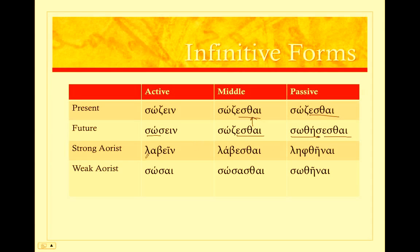The strong aorist is very similar in endings. So labein — notice the accent, the circumflex over the final syllable. Labesthai — same ending there, -esthai for the middle. Notice there's no augment. Remember, infinitives we don't augment.